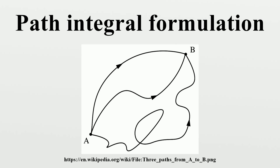In order to find the overall probability amplitude for a given process, one adds up, or integrates, the amplitude of postulate 3 over the space of all possible paths of the system in between the initial and final states, including those that are absurd by classical standards.